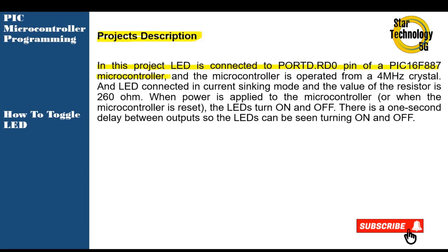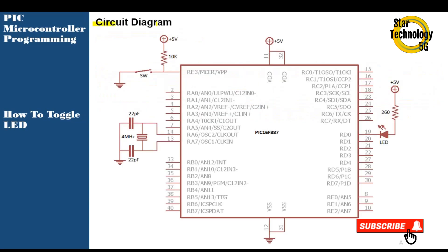The microcontroller is operated from a 4MHz crystal and the LED is connected in current sinking mode. The value of the resistor is 260 ohm. When power is applied to the microcontroller or when the microcontroller is reset, the LED turns on and off. There is a one second delay between outputs so the LED can be seen turning on and off.